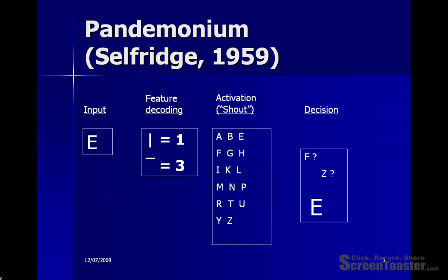Selfridge in his writings about Pandemonium talked about demons, and he conceived of demons as basically cognitive units that carried out particular activities. Let's suppose that a person is presented with the letter E. The image demon would receive the sensory input and pass this along to the feature demon, and the feature demon would then decompose the input into its basic features. In the case of the letter E, this would be broken down into a vertical line and three horizontal lines.